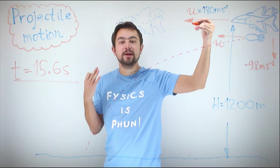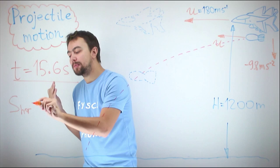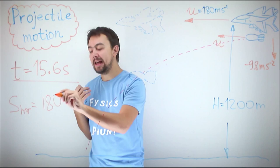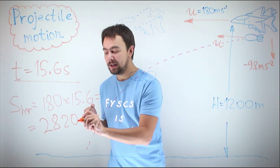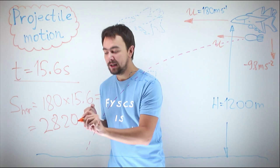Since we know the time, we can find the horizontal displacement or range. The horizontal motion is uniform, so horizontal displacement equals u multiplied by t: that's 180 multiplied by 15.6, which gives us 2820 meters. So the pilot has to release the bomb 2800 meters in advance.